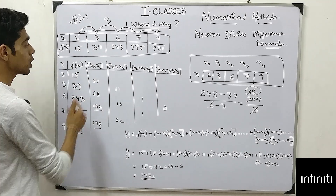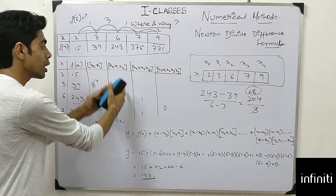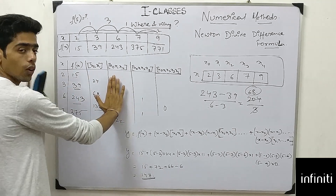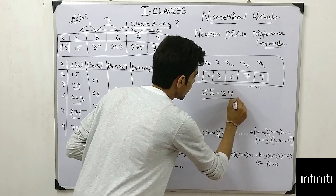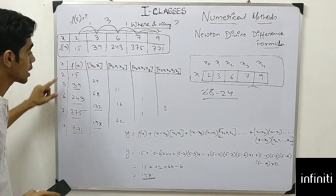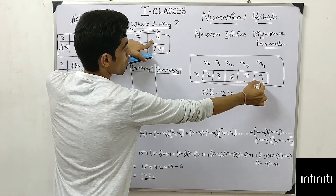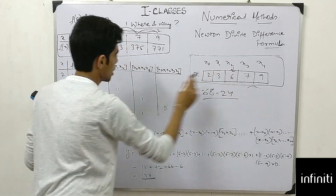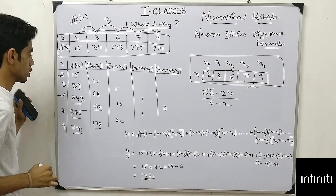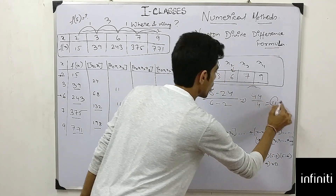Now moving to f[x0, x1, x2] — the second divided differences. The computation is the same as before but using the first divided difference values. For example: 68 minus 24, divided by x2 minus x0. Here x2 is 6 and x0 is 2, so 6 minus 2 is 4. That gives 44 divided by 4, which equals 11. So 11 is my answer for this entry.